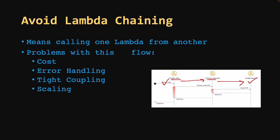The second problem with Lambda chaining is error handling — a parent function has to handle failure scenarios in the child Lambda, adding complexity. Third is tight coupling: if one Lambda like create invoice is taking time, the others are unnecessarily waiting. Fourth is scaling: these three tightly coupled Lambdas all need to be scaled at the same time. These are the key problems with Lambda chaining, and we should avoid this pattern.